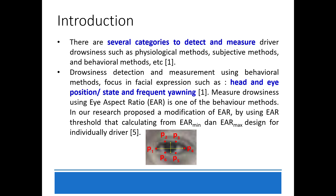Drowsiness detection and measurement using behavior methods focuses on facial expressions such as head and eye positions or state, and frequent yawning. Measuring drowsiness using eye aspect ratio, or EAR, is one of the behavior methods. In our previous research, we proposed modifications of EAR by using EAR thresholds calculated from EAR mean and EAR marks, designed for individual drivers.